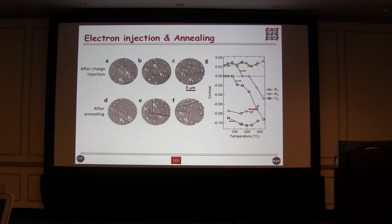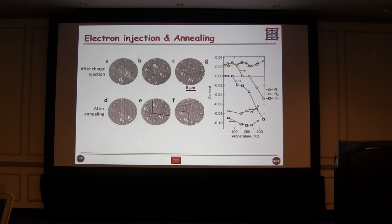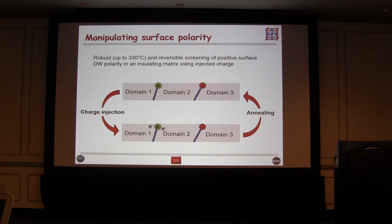So to summarize: the polar domain walls — at least those with positive polarity pointing upward — can be screened by charge injection. Then when we anneal the sample up to around 330 degrees and come back down to room temperature, we get back exactly the same polarity. We can recognize the polarity of the domain walls at the surface of the calcium titanate. We inject electrons, it screens the positive polarity walls, and when we anneal we get back exactly the same structure as before. We have some kind of robust nanometric polar charge — and we have the opposite polarity that remains unaffected by the charge injection.